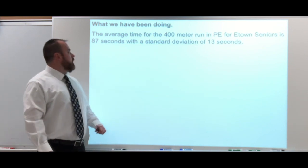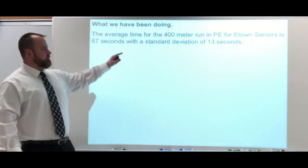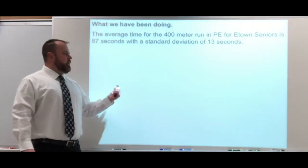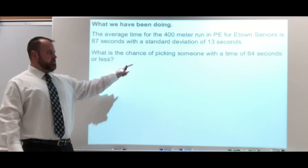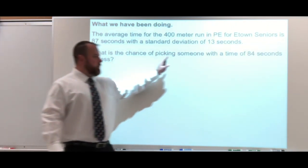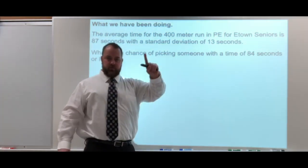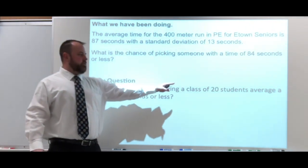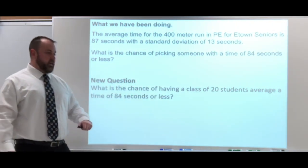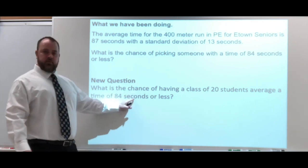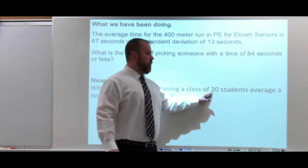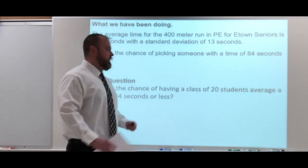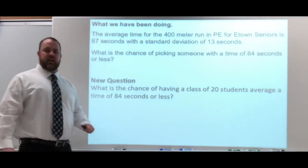Here's a problem we had before: E-Town Seniors, with an average of 87 seconds and a standard deviation of 13 seconds to run the 400 meters. The old question was: what's the chance of picking someone with a time of 84 seconds or less? That was picking one person at a time. The new question we're going to look at: what's the chance of having a class of 20 students average a time of 84 seconds or less? It's still 84 seconds or less, but now we're looking at a group of 20 students and comparing their average.